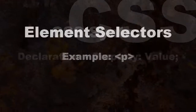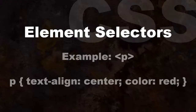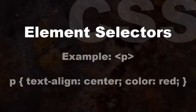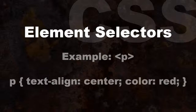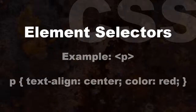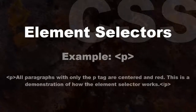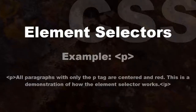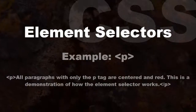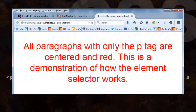Element selectors select all HTML tags of the same name. For instance, the p tag: p { text-align: center; color: red; }. For example, all paragraphs with only the p tag are centered and red. This is a demonstration of how the element selector works.